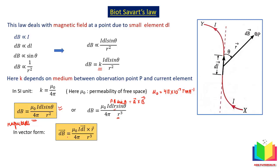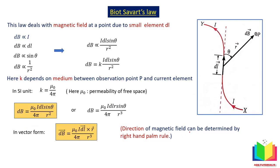The direction of dB is perpendicular to both dL and r. The direction of the magnetic field can be given by the right-hand thumb rule: place your thumb in the direction of current, and the curl of the fingers gives the direction of the magnetic field. So the magnetic field goes in an anti-clockwise direction around the wire. For a specific point P, the direction of the magnetic field will be perpendicular to the page — either inwards or outwards depending on the geometry.